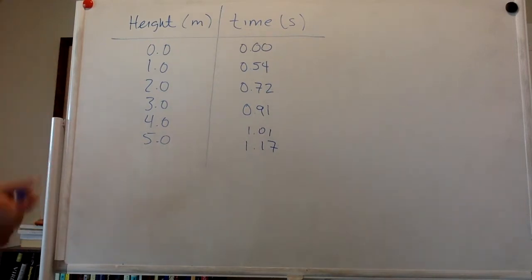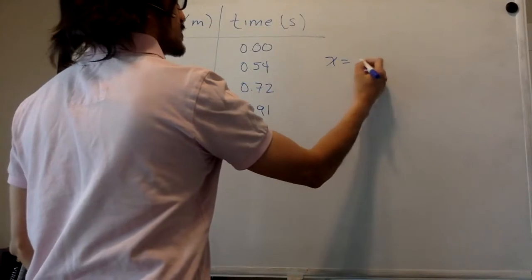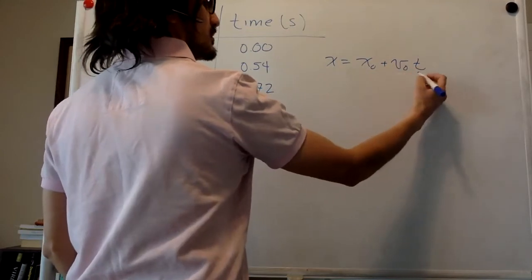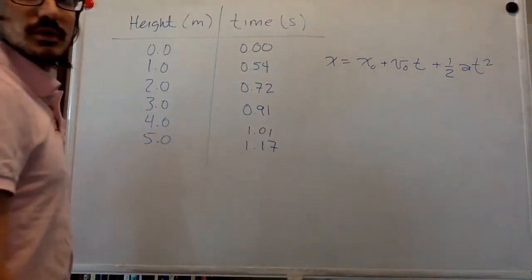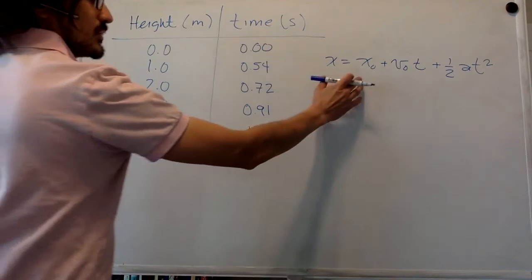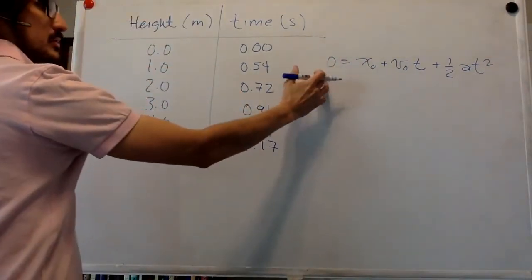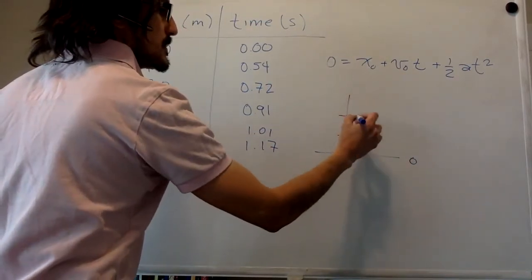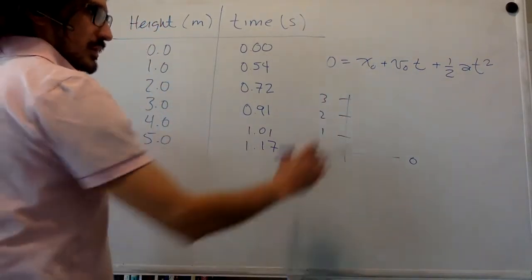In any case, you're going to need this kinematic equation. So the position is equal to the initial position plus the initial velocity times time plus one half of the acceleration times time squared. So in this case, the final position is always zero because it's the ground, right? Zero meters. One, two, three meters. This is where you're going to drop it.